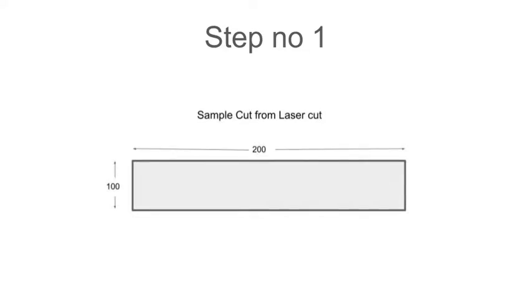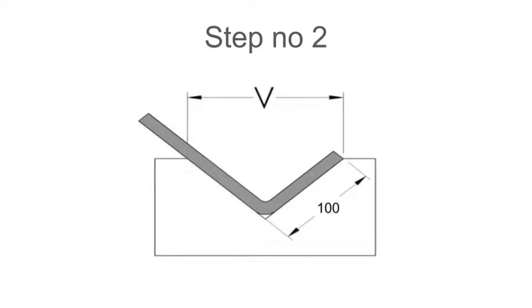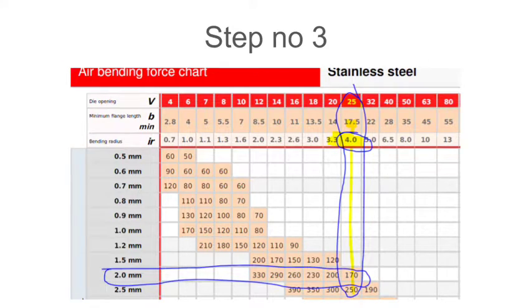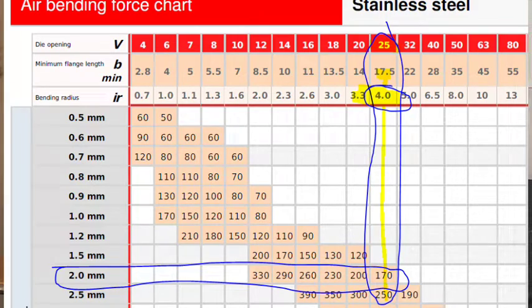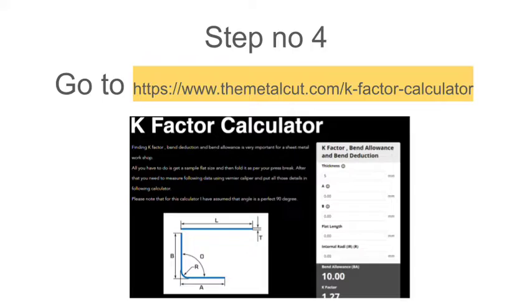Now let's find out how to find the correct k-factor for your own press brake. Step number one: cut a 200 by 100 strip. Step number two: put it on the press brake and fold it to a 90-degree angle. Step number three: find out your internal radius based on the press brake tooling force chart that is provided to you.